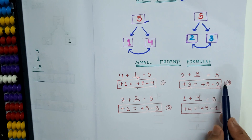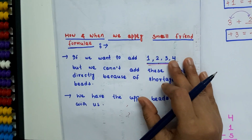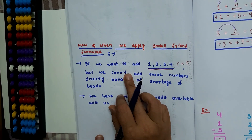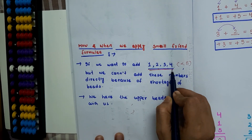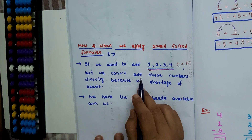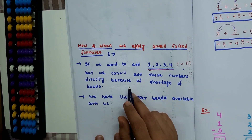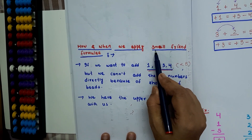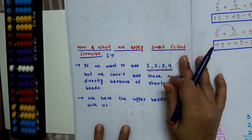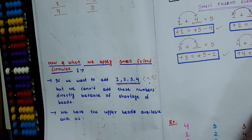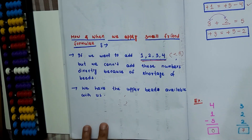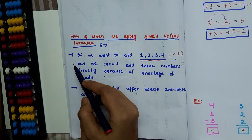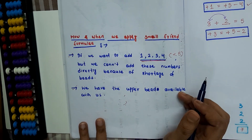These are the 4 small friend addition formulas. Now let's learn how and when we apply the small friend formula. If we want to add 1, 2, 3, or 4 — that is less than 5 — but we cannot add these numbers directly because of a shortage of bits, in that case we can apply the small friend formula. Another condition is that we have the upper bits available with us. In these two conditions, we can apply the small friend formula.